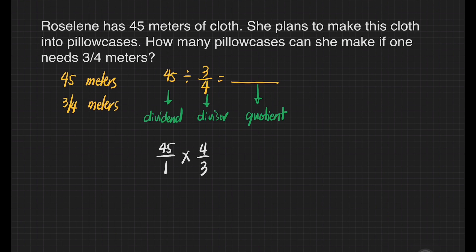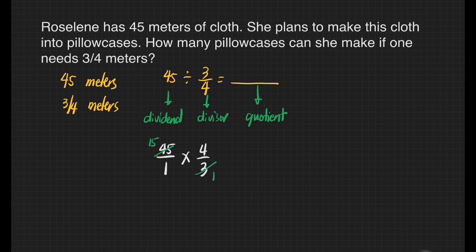Unless there are some numbers that we can cancel. Yes, we have 45 and 3. What number can we divide both 45 and 3? That's going to be 3. 45 divided by 3 is equal to 15. 3 divided by 3 is equal to 1. We're ready to multiply.